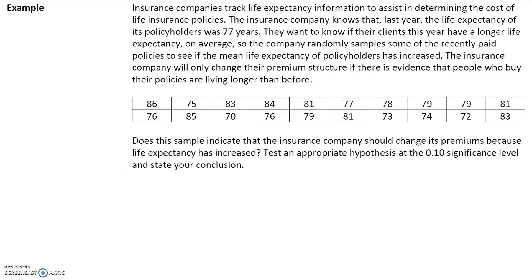In our next example, insurance companies track life expectancy information to assist in determining the cost of life insurance policies. The insurance company knows that last year, the life expectancy of its policyholders was 77 years — this is the accepted fact. So our null hypothesis is that the mean is 77 years. They want to know if their clients this year have a longer life expectancy on average, so the alternative hypothesis is that the mean is greater than 77.